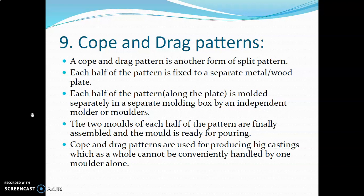You can see here we have two different halves for a single component. Suppose you want to make one cylinder — what we have done is we have made two parts from a single component. For the preparation of the mold, both pattern halves will be prepared separately and independently. One worker will prepare one half and another worker will prepare the other half. Then again they will be assembled together and finally you will get the complete cast product. The two molds of each half of the pattern are finally assembled and the mold is ready for pouring.